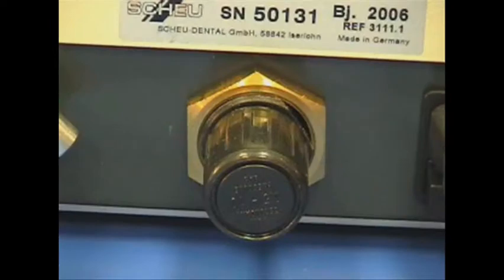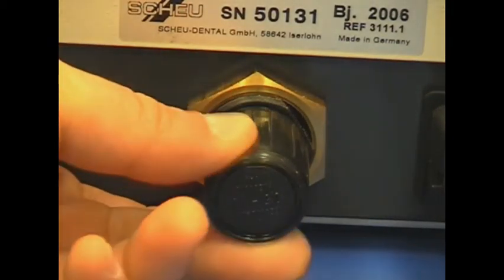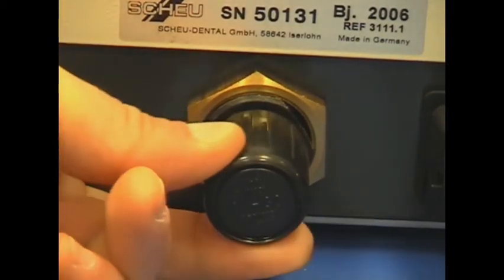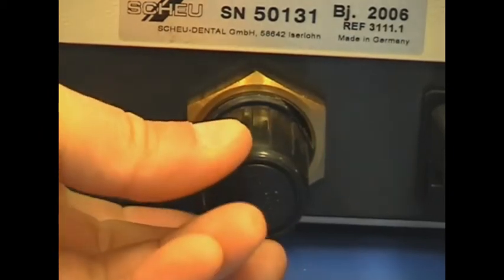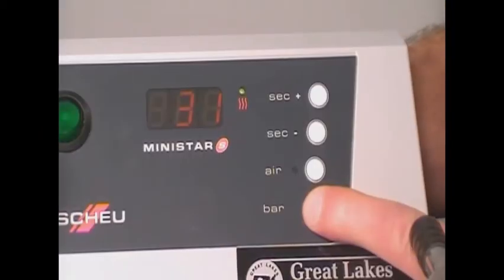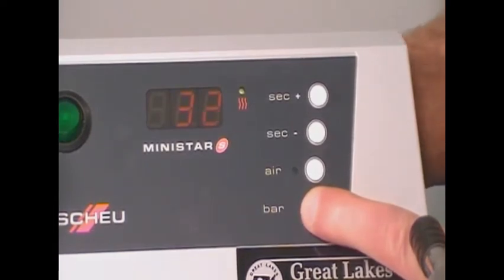To adjust the pressure, unlock the dial by pulling out on the outer ring. Rotate the dial clockwise to increase pressure, counterclockwise to decrease pressure. Do not exceed the maximum pressure of 3.2 bar. Adjusting the pressure higher than 3.2 bar could activate the safety release valve when the chamber is pressurized.